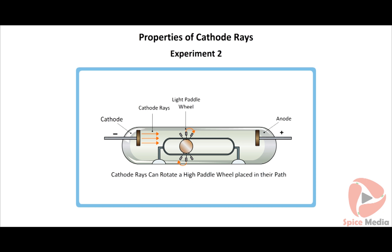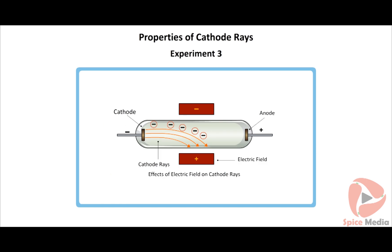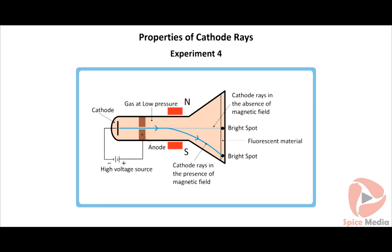Experiment 3: cathode rays passed through an electric field are deflected towards the positive plate. Conclusion: cathode rays are negatively charged particles. Experiment 4: cathode rays passed through a magnetic field are deflected perpendicular to the applied magnetic field. Conclusion: the direction of deflection confirms that cathode rays are negatively charged particles. These negatively charged particles are called electrons.